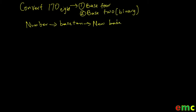To convert numbers from one base to base 10, we have a video on that — the link is displayed at the top of your screen and also provided in the description below. To convert from one base to base 10, you use the power expansion method. And to convert numbers from base 10 to another base, you use the continuous division method. The link to our video on that is also provided in the description below.